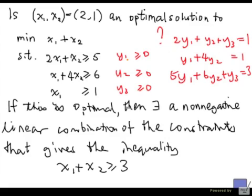So the question is, can we find these y's? If we solve this system here, the solution is y1 equal to 3 over 7, y2 equal to 1 over 7, and y3 equal to 0.